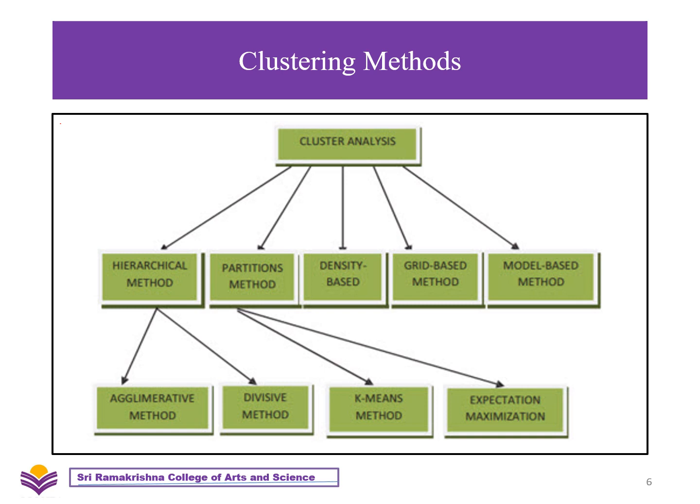The agglomerative approach is also known as the bottom-up approach. Here we begin with every object constituting a separate group, and it continues to fuse objects or groups that are close together. The divisive approach is also known as the top-down approach — we begin with all the objects in the same cluster. This method is rigid; it can never be undone once a fusion or division is completed. Next is partitioning — in this approach, several partitions are created and then evaluated based on given criteria.